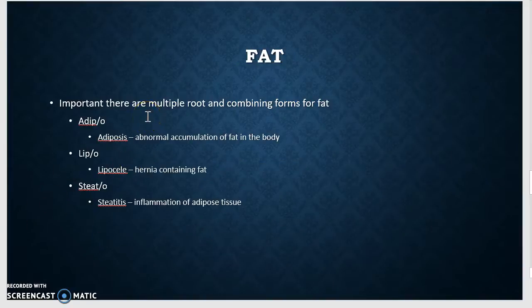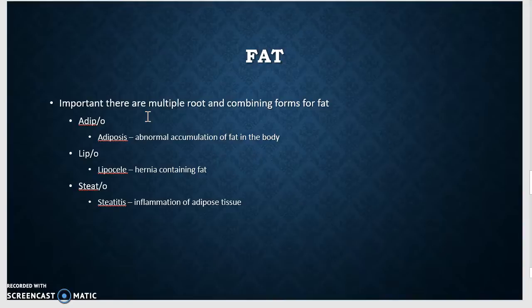Fat is associated with the skin as well — underneath the skin you have adipo. Adipose is a collection of fat in the body. Lipo — lipocele is herniation of fat. And steato — steatitis is inflammation of the adipose or fat tissue. Again, fat has multiple words, and this is a theme you've got to get used to: there's not always just one word that means something — sometimes there are multiple words used in different formats.